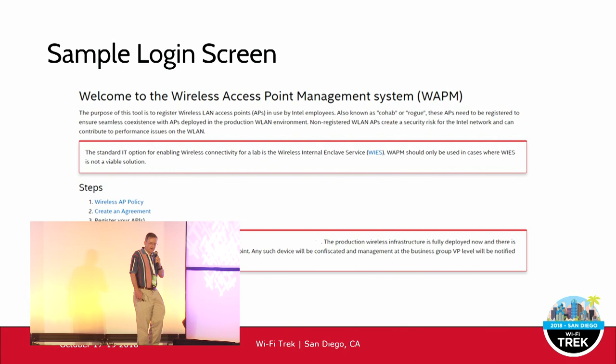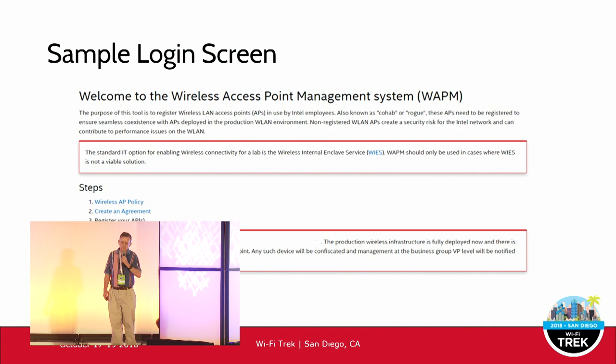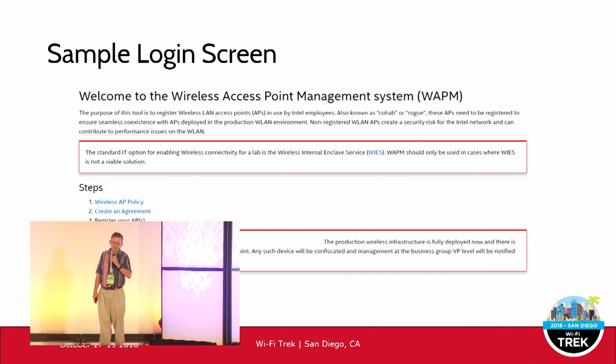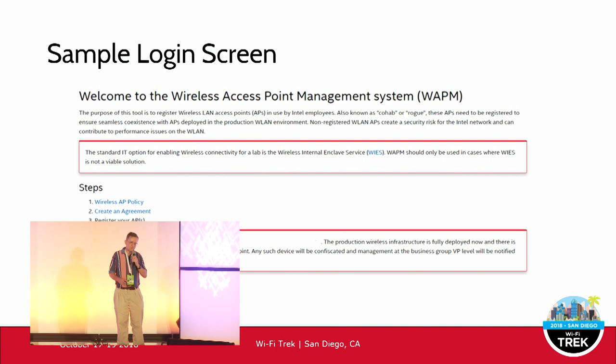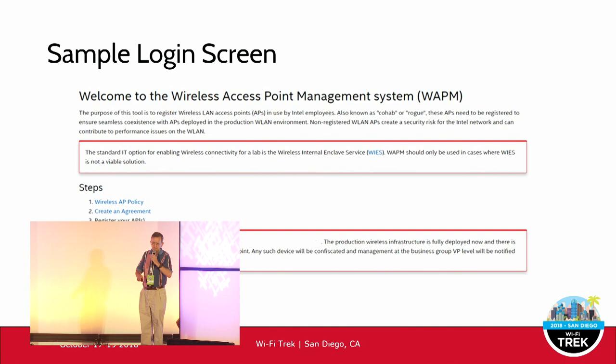Here's an example logon screen. Towards the top, we indicate that we prefer users go to what we call WIES — the IT-provided lab wireless solution. But if that doesn't meet your needs, there are two general steps: create an agreement and register your access points underneath it. The bottom section in red warns users to follow the process, because if they don't, there will be consequences.